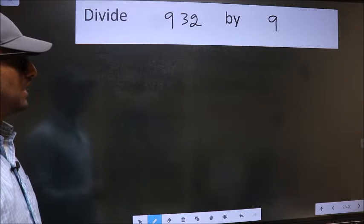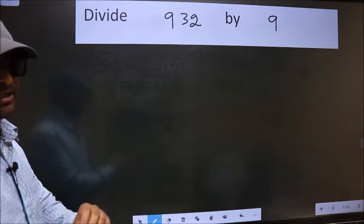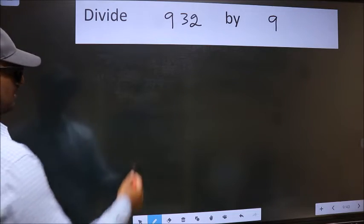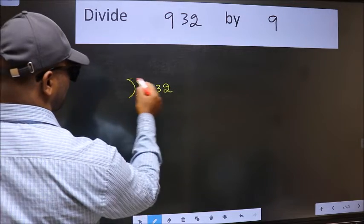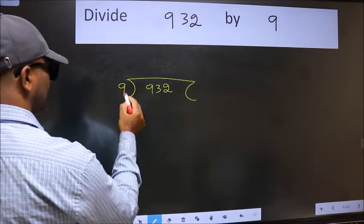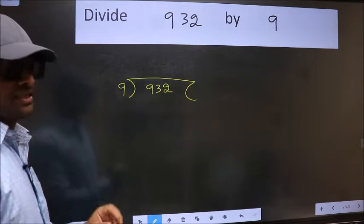Divide 9.32 by 9. To do this division, we should frame it in this way. 9.32 here and 9 here. This is your step 1.